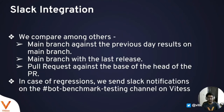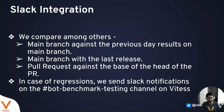We also have Slack integration. Once AreWeFastYet has run the micro and macro benchmarks and stored the results, we compare them — for example, comparing main branch results against the previous day's run, or PRs against their base. If there is any regression, we send a Slack notification to the benchmarking channel. Developers can then check what the regression was, which benchmark it came from, and figure out what change caused it.